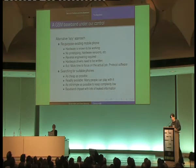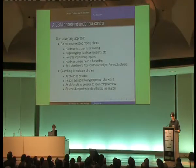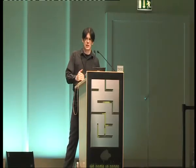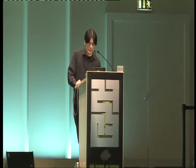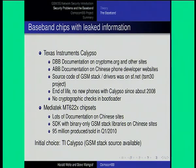By searching for suitable phones there are a couple of criteria. We want a phone that's as cheap as possible because we might break a couple of them. It should be readily available so many people can play with it. You want to use a phone that everyone interested in the subject can still buy and play with the open source software you create. Of course you want a baseband chipset where a lot of information is known. The result was we went for the Texas Instruments Calypso chipset, where the digital baseband documentation appeared on Cryptome quite a number of years ago. The analog baseband documentation you can find on Chinese telephone developer websites — sites like 52RDBBS are a real fountain of wealth of information.